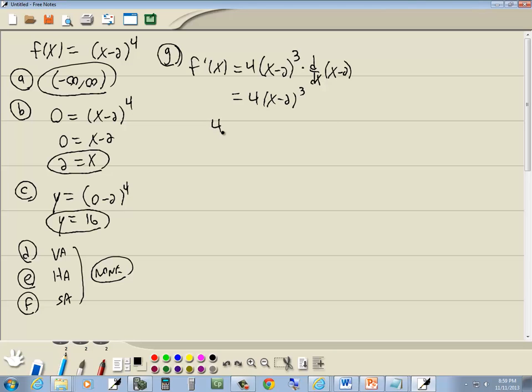Now we want to set that equal to 0 and solve it. So we got 4 times x minus 2 to the third equal to 0. Now the 4 we don't need to worry about. We'll set the x minus 2 equal to 0, and we get x is equal to 2. So that's our critical value.